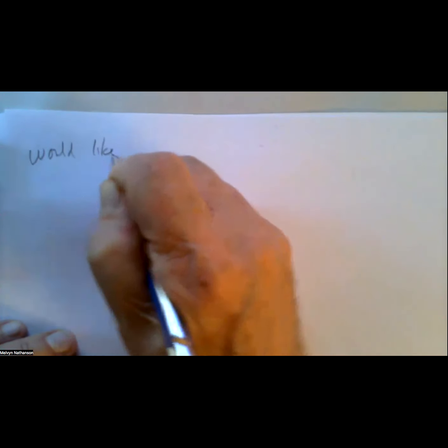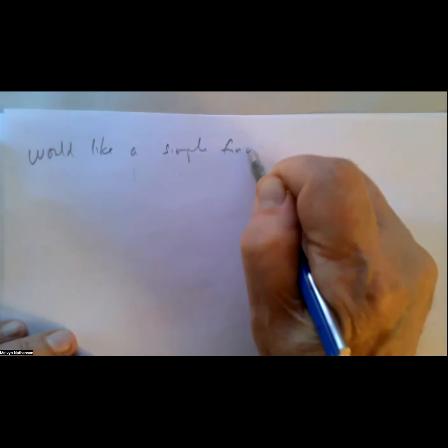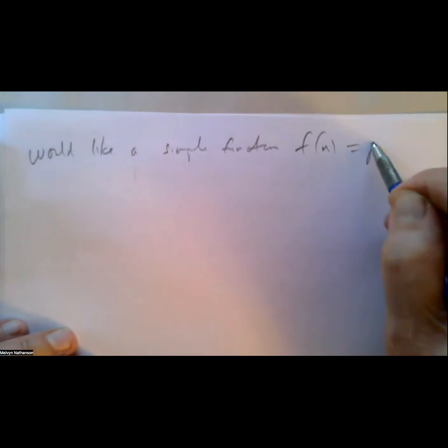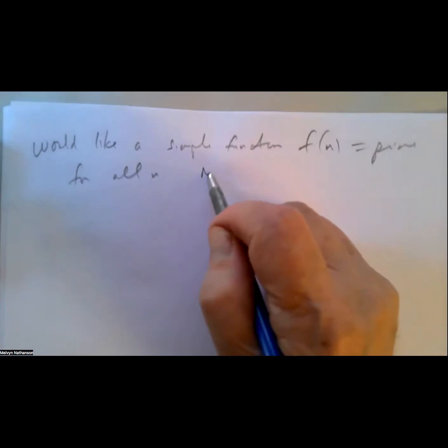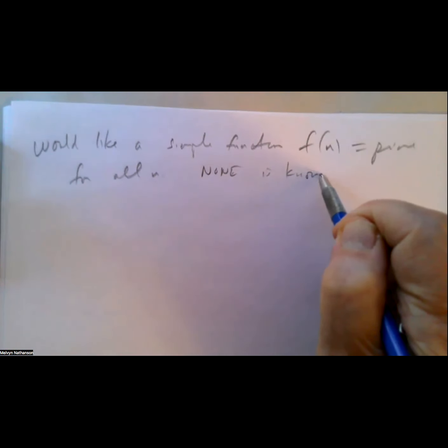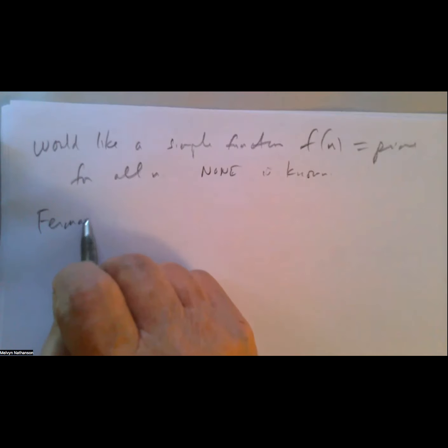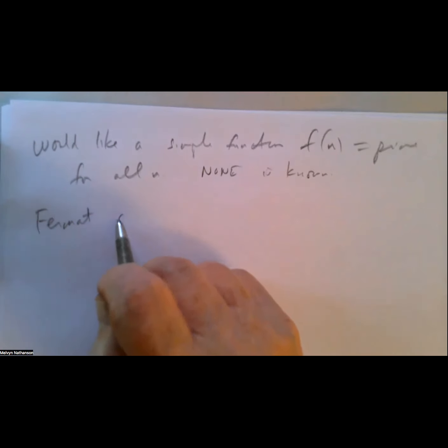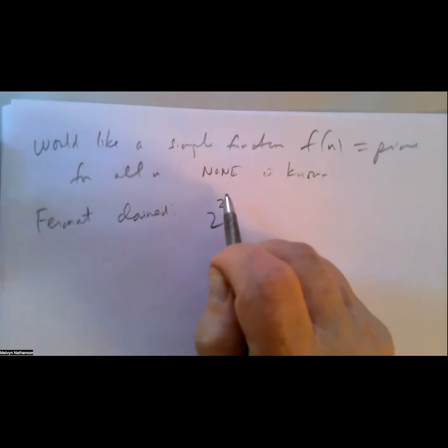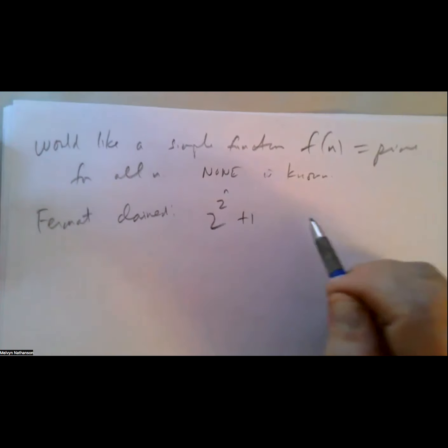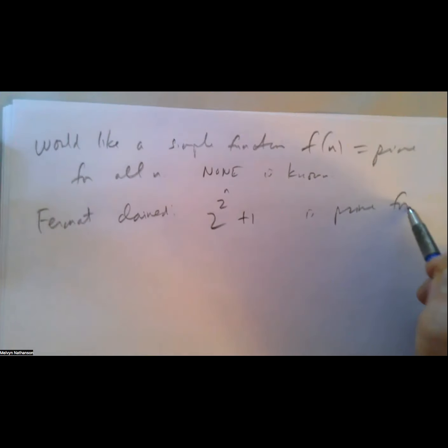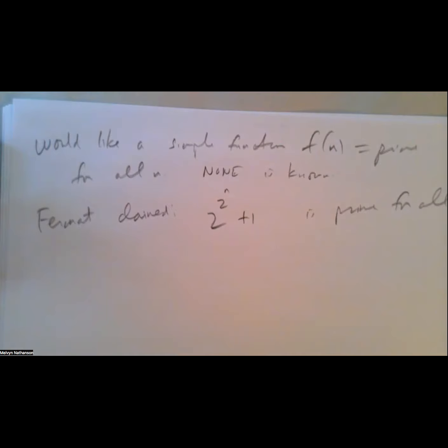People would like a simple function f(n) equal to a prime for all n, but none is known. People have come up with different candidates. For example, the French 17th-century mathematician Fermat claimed that 2 to the 2 to the power n, plus 1, is prime for all n. True or false?